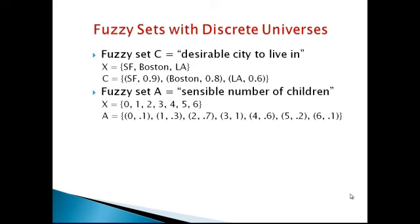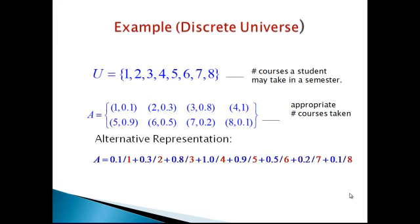Another example is sensible number of children. The universal set X equals {0, 1, 2, 3, 4, 5, 6} with membership values 0.1, 0.3, 0.7, 1, 0.6, 0.2, and 0.1 respectively. Another representation for a discrete universe is: A equals {0.1/1, 0.3/2, 0.8/3, 0.9/4, 0.5/5, 0.2/6, 0.7/7}, where the slash is not an ordinary division — it denotes the relationship between the membership value and the element.